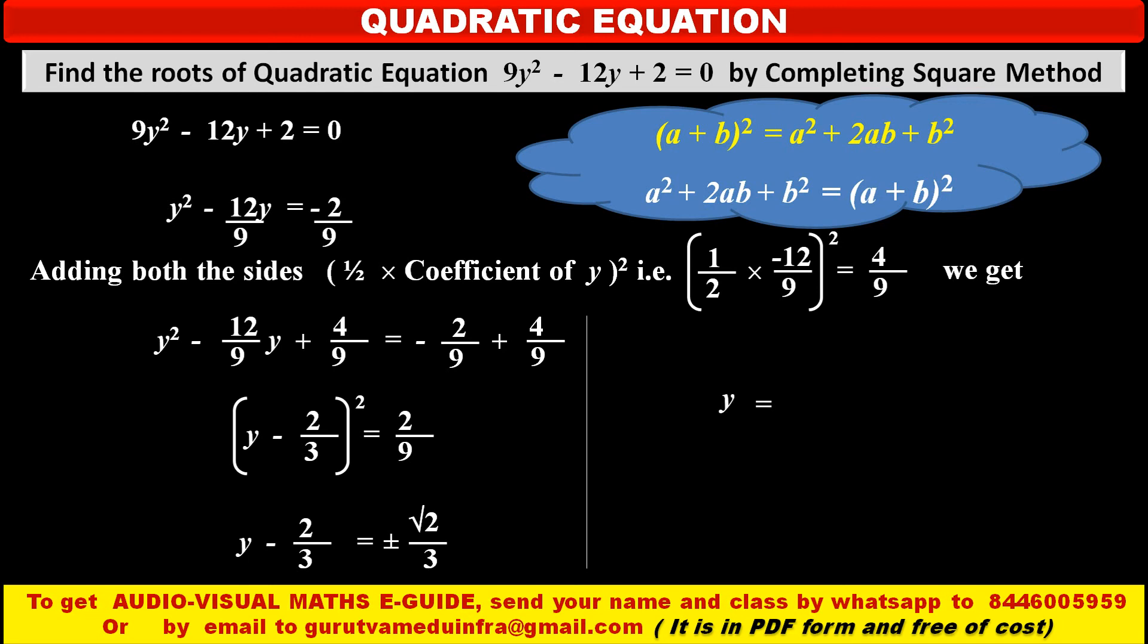Shifting -2/3 from left to right it will become +2/3 and we get value of variable y as y = ±√2 + 2 upon 3.